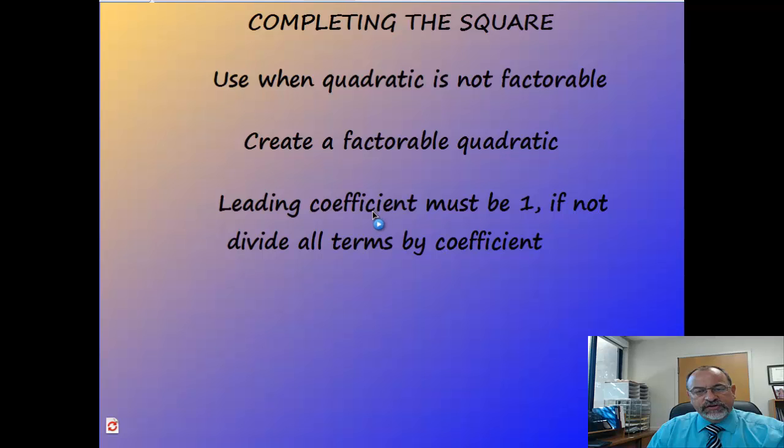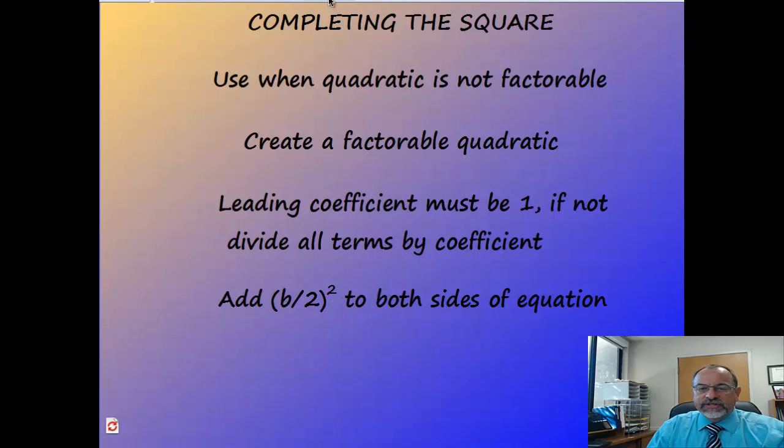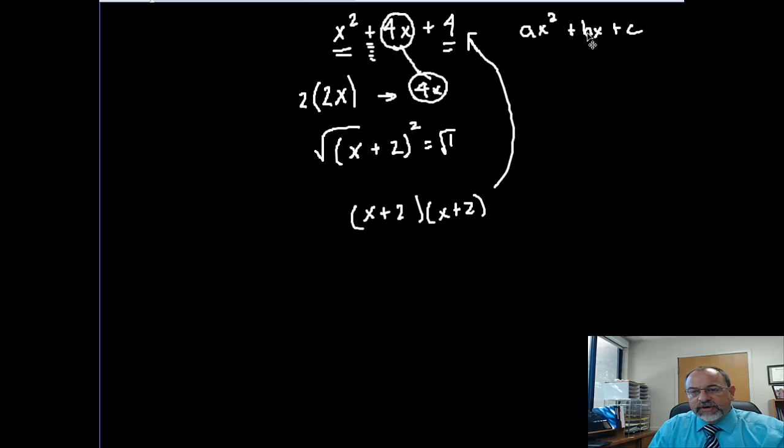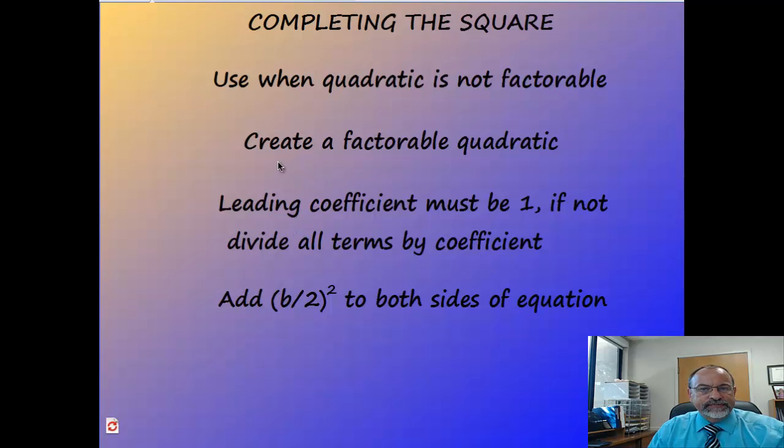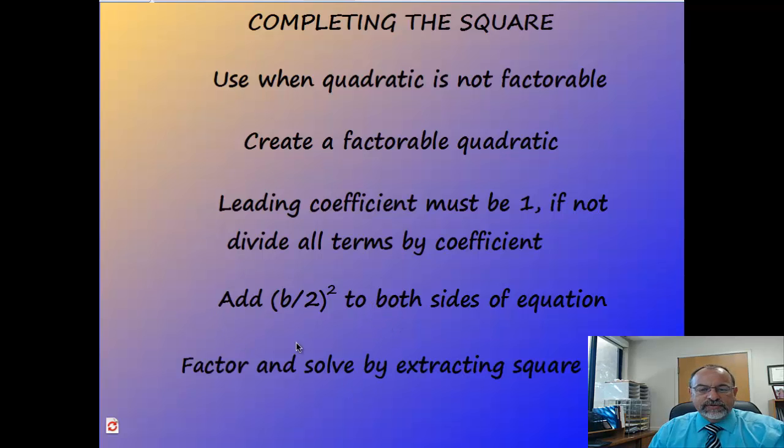So, once we have a coefficient of 1, we can then add (b/2)² to both sides of the equation. And you remember, what does the b represent? The b represents this number right here from our standard form. It's this number that's in front of the x. So I take that number, whatever it is, whether it be a fraction, a decimal, a whole number, whatever it is, I take that number, I divide it by 2, or multiply it by half if it's a fraction, and then add that number to both sides. Once I've done that, I've created a perfect square on the left, and then I can simply factor that perfect square, and then extract the square root.